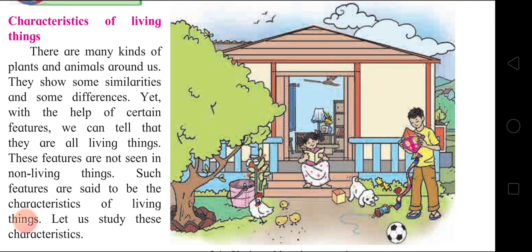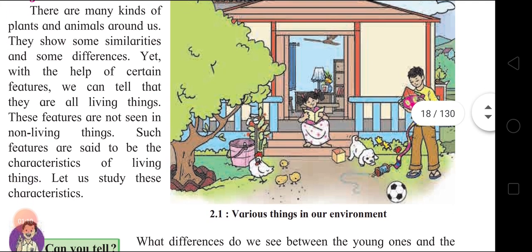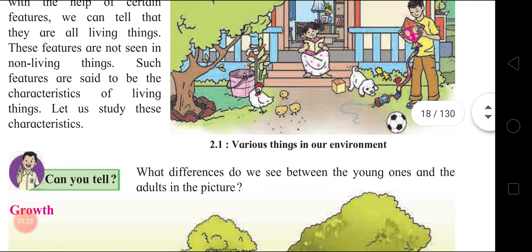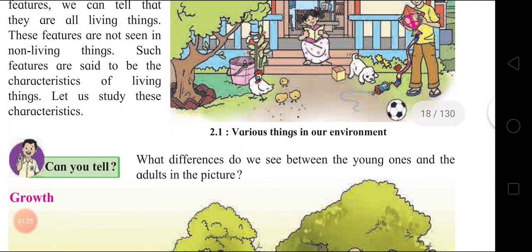There are many kinds of plants and animals around us. They show some similarities and some differences. Yet with the help of certain features, we can tell that they are all living things. These features are not seen in non-living things. Such features are said to be the characteristics of living things. Let us study these characteristics.